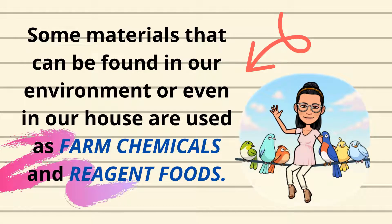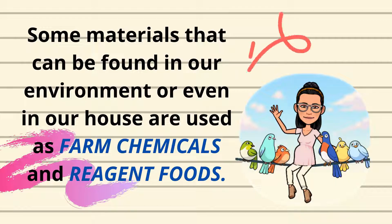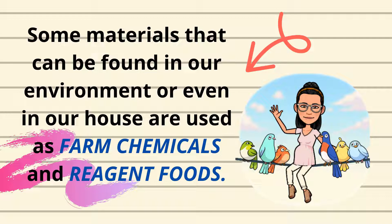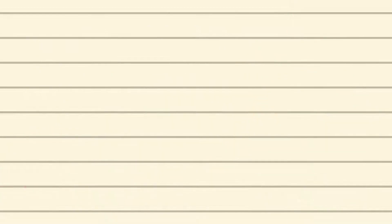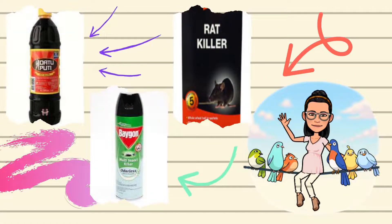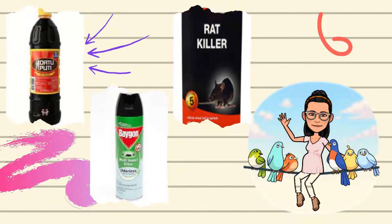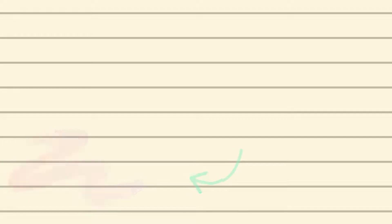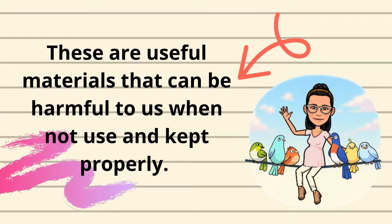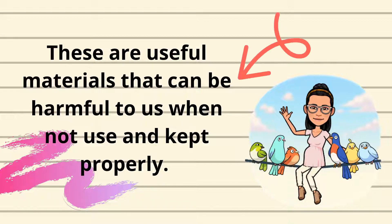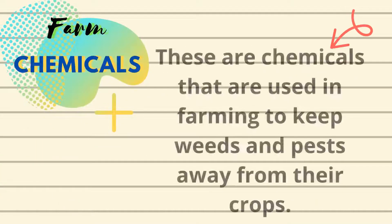Did you know that some materials that can be found in our environment or even in our house are used as farm chemicals and radiant foods? Have you ever tried using these chemicals? These are useful materials that can be harmful to us when not used and kept properly. Do you want to know what they are?